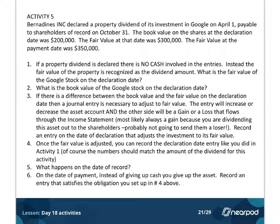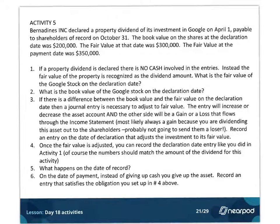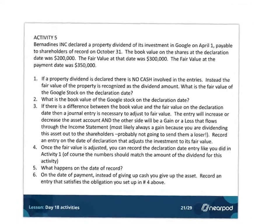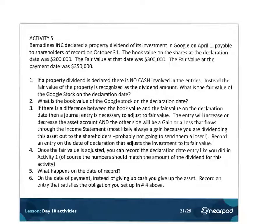We have dividends that are paid in the form of property. So rather than distributing cash, we're going to distribute property. Oftentimes that property is some kind of investment in another company, because that's a relatively easy thing to split. It would be hard to dividend out your furniture before you had settled with all your shareholders. So if it's going to be a property dividend, it has to be something that's divisible.